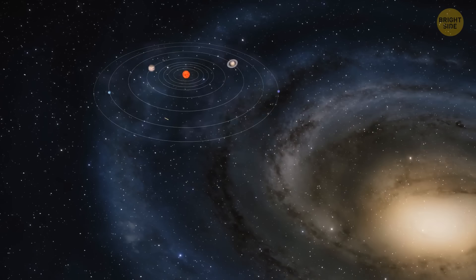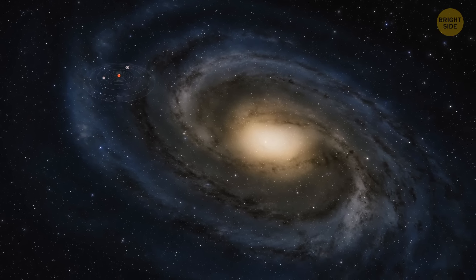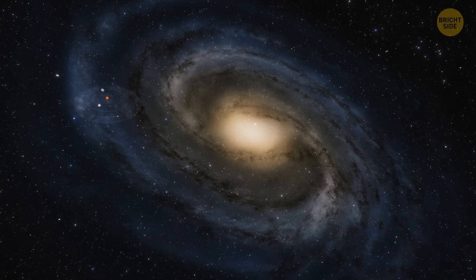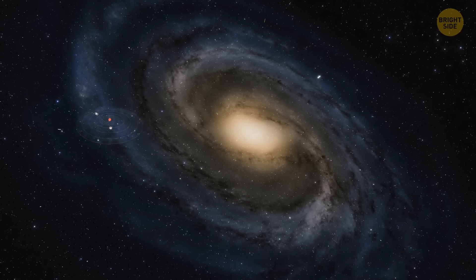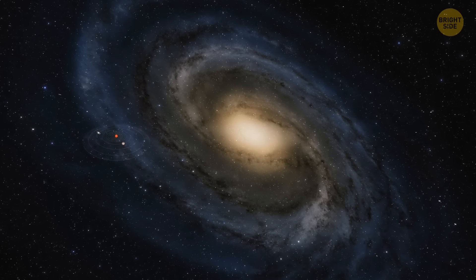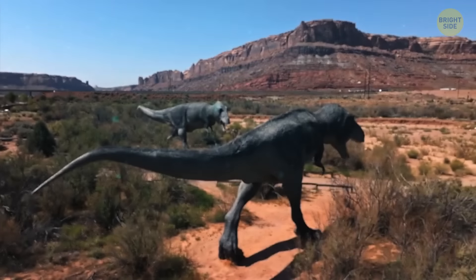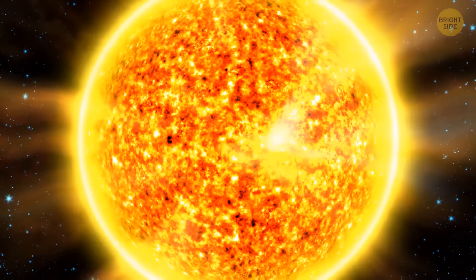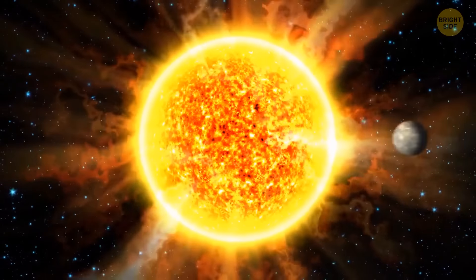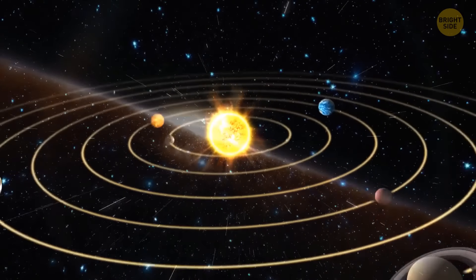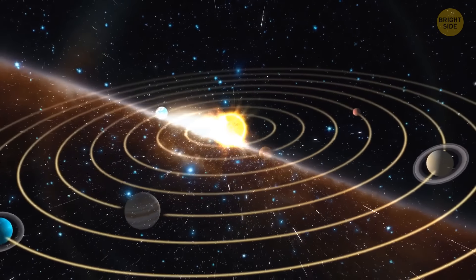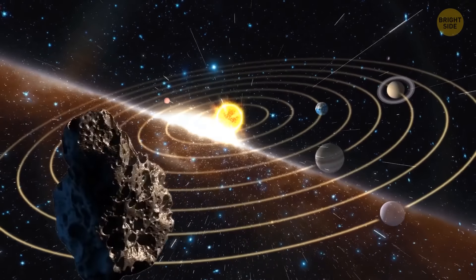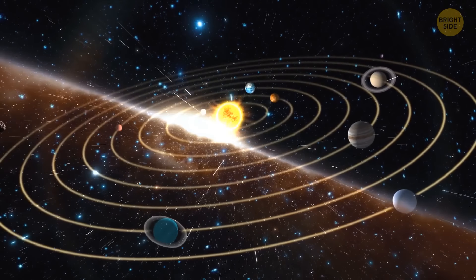The solar system is also moving through the Milky Way as it orbits around the galactic center. It takes about 230 million years for our system to make one complete orbit around the galaxy. Just imagine that. Since the time of the dinosaurs, we've traveled just a quarter of this way. The position of the solar system in the galaxy affects our life in many ways, like the amount of radiation and cosmic rays we're exposed to, and even the likelihood of asteroid impacts.